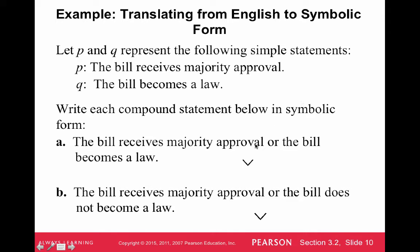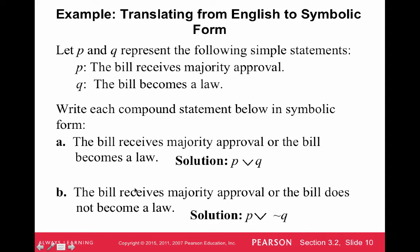Let's translate from English to symbolic form. Let P be 'the bill receives majority approval' and Q be 'the bill becomes law.' 'The bill receives majority approval or the bill becomes law' is just P ∨ Q. The next one, 'the bill receives majority approval or the bill does not become law,' has a negation of the second statement, so that's P ∨ ¬Q.